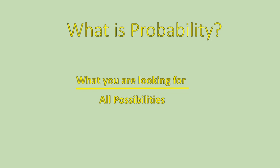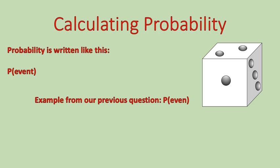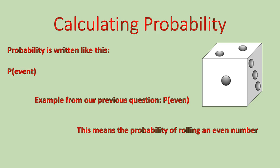So that's how we calculate probability — it's a one-half probability that I would roll an even number. What you are looking for goes in the numerator, and all total possibilities go in the denominator. Probability is written like this: P with parentheses of the event, meaning the probability of that event. So from the previous question, I would write P(even), which means the probability of rolling an even number. Whatever's inside the parentheses is what you're looking for.